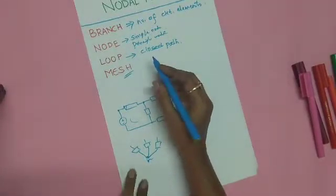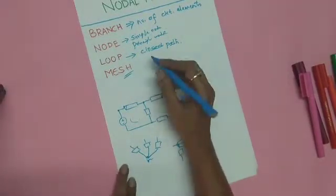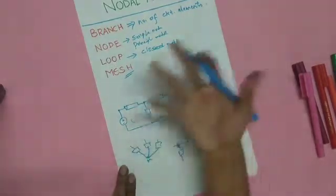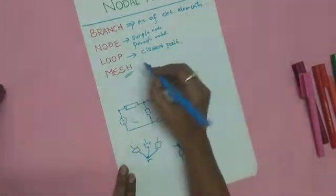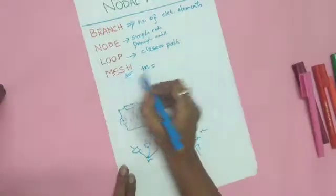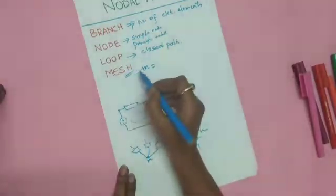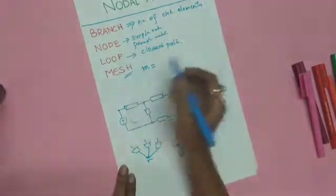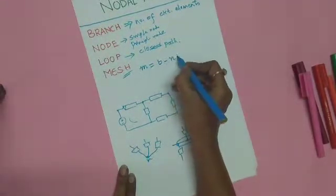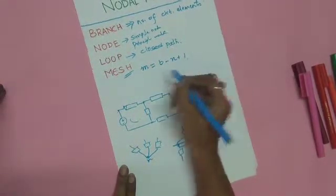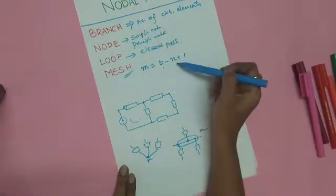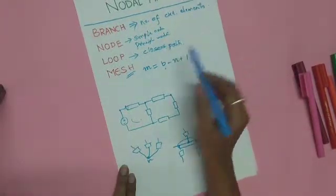The number of meshes in a circuit can be found using the formula: M = B − N + 1, where M is the number of meshes, B is the number of branches, and N is the number of nodes.